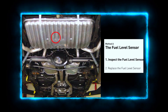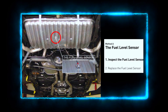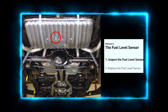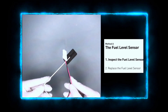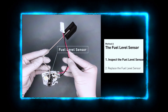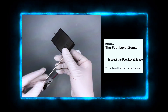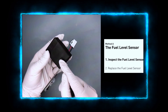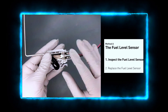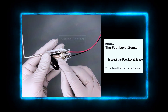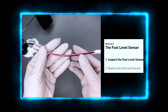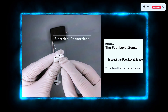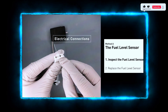The fuel level sensor is usually located in the fuel tank or attached to the fuel pump carrier bracket. First, carefully remove the fuel level sensor from your vehicle. Visually check the fuel level sensor's float, sliding contact, wires, and electrical connections for any damage.